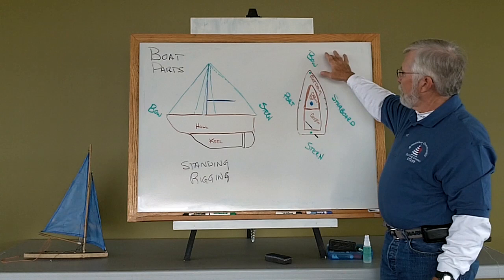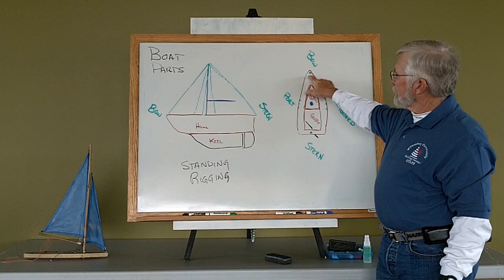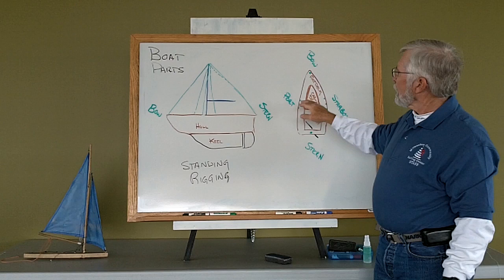Looking down on our same boat, we have the bow, which is the front of the boat, the stern, which is the back of the boat. We have our side stays, our forestay and our backstay. We have a little cabin, a cabin area. So we have a cabin top and out of the cabin top comes our mast.